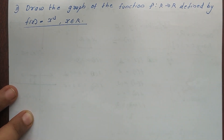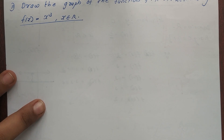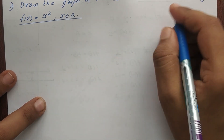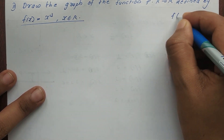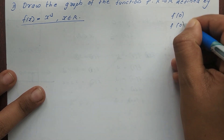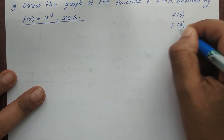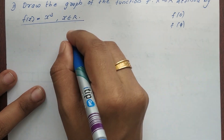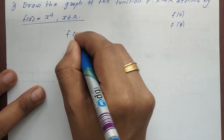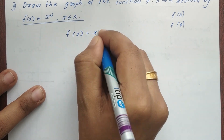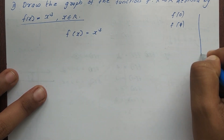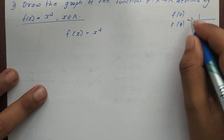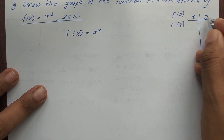So we are going to define f of x is equal to x cube. We are going to find f of 0, f of 1, and f of 2. This function is f of x is equal to x cube. So what do we do? We set up a table with x and y, where y is x cube.